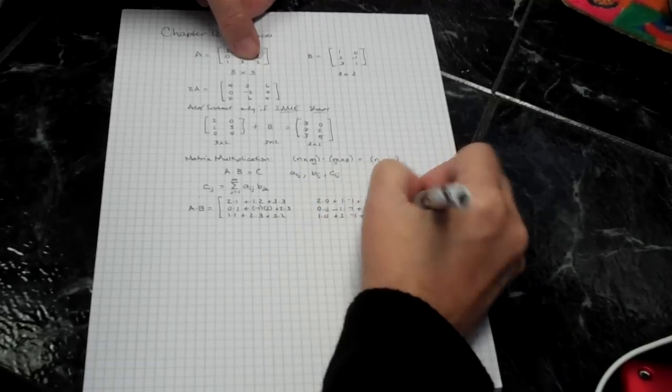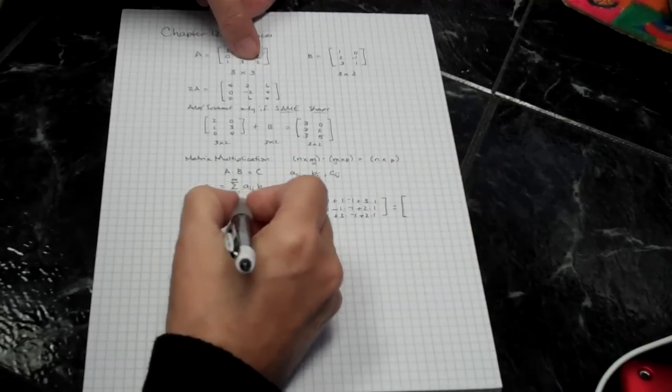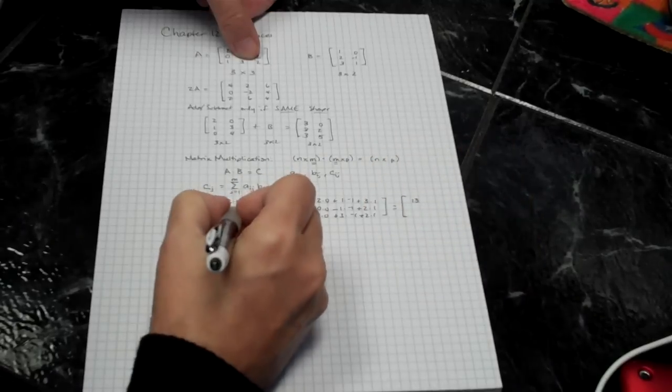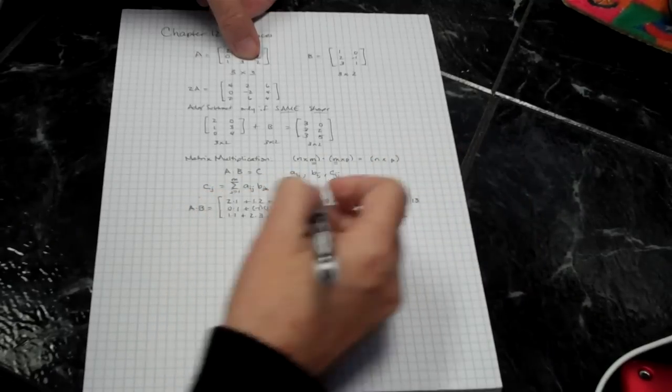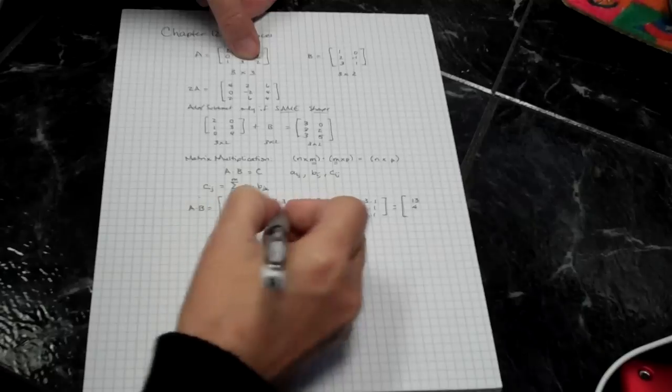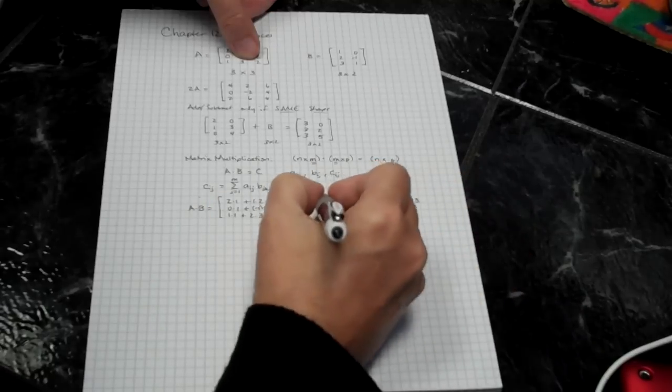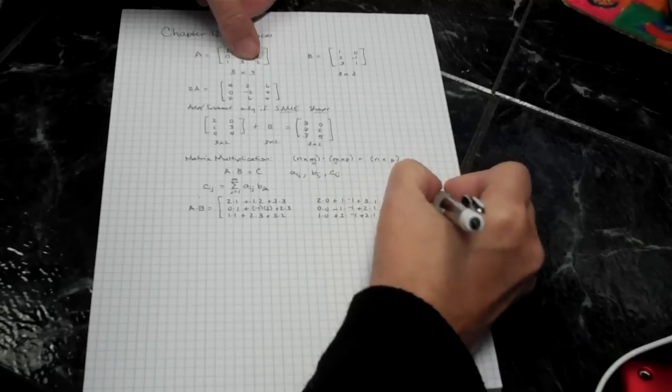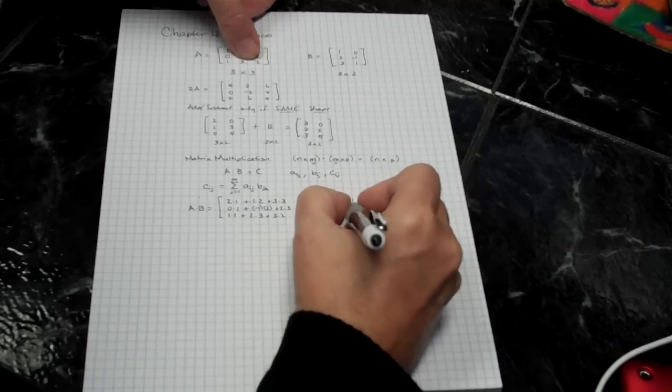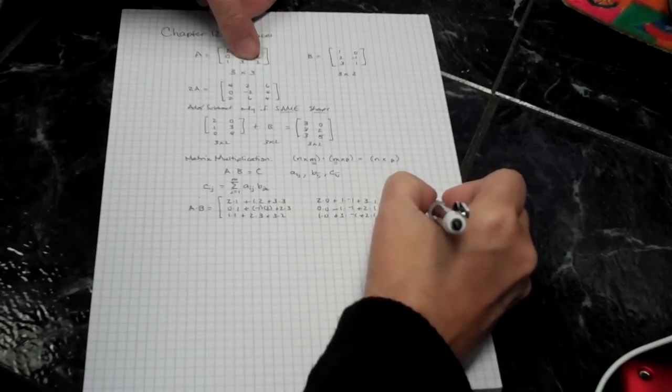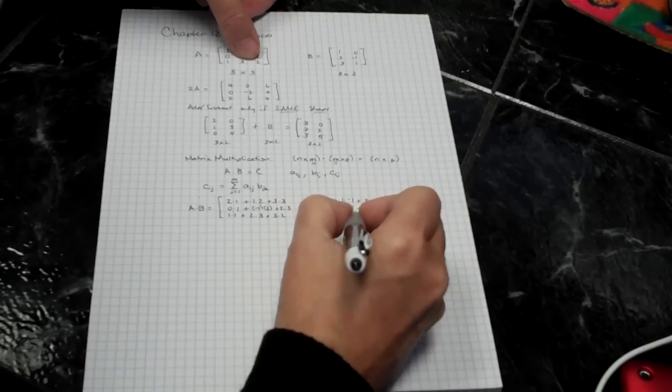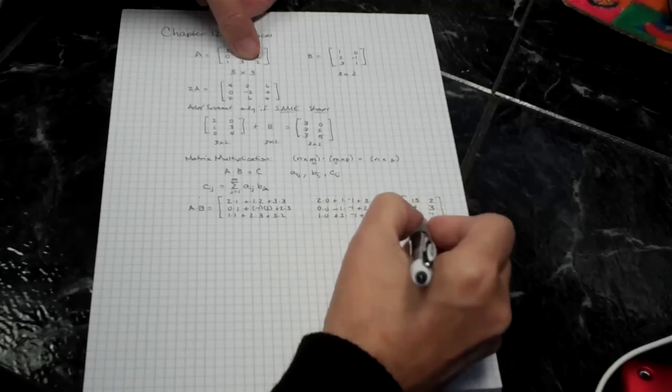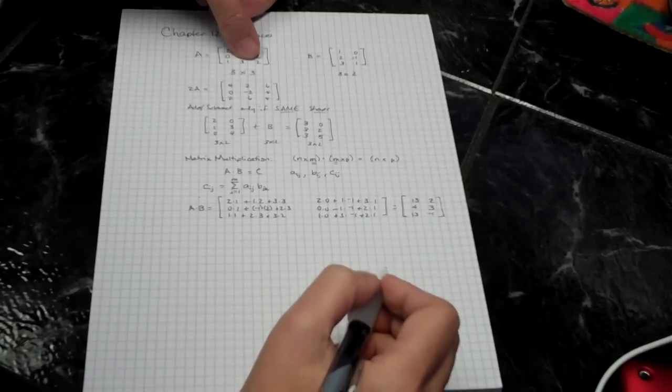And this, of course, when I simplify this, I have 2 plus 2 plus 9, so 13, 0, negative 2 and 6 is 4. 1, 6 and 6 is 13. This is negative 1 and 3 is 2. I have positive 1 and 2 is 3. And negative 3 and 2 is negative 1. And so I have here my answer, and it is indeed a 3 by 2.